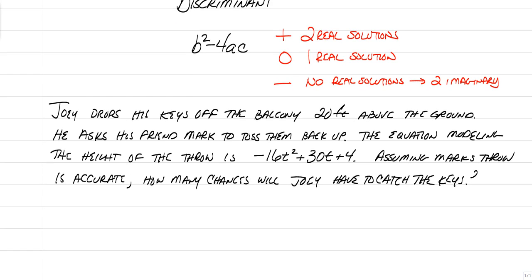So it's important to know the difference between two real solutions versus two imaginary solutions. And we're going to apply it. Sometimes there are ways of answering questions without ever having to do all the work. So here's an example of Joey dropping his keys off of his balcony that's 20 feet above the ground, and he asks his friend Mark to just toss them back up to him. The equation given is negative 16t squared plus 30t plus 4. Now that equation means the negative 16 is actually the force of gravity. 30 is how fast Mark is throwing them back up to Joey at 30 feet per second. And 4 is the release height.